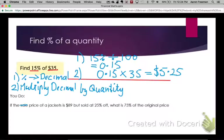Because the jacket is 25% off, we're only paying for 75% of the original price. So $89 is 100% of the price. If we take 25% off that, we're only paying for 75% of the jacket's original price.